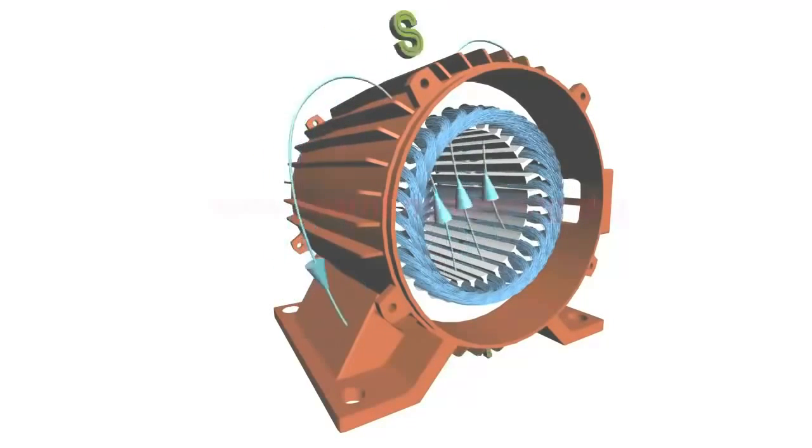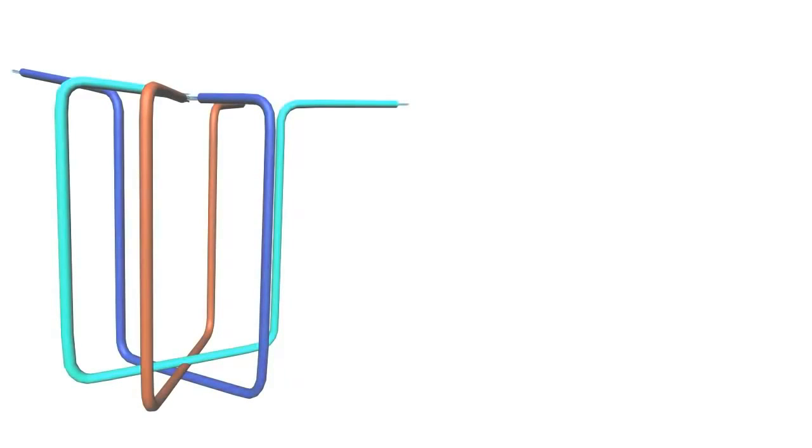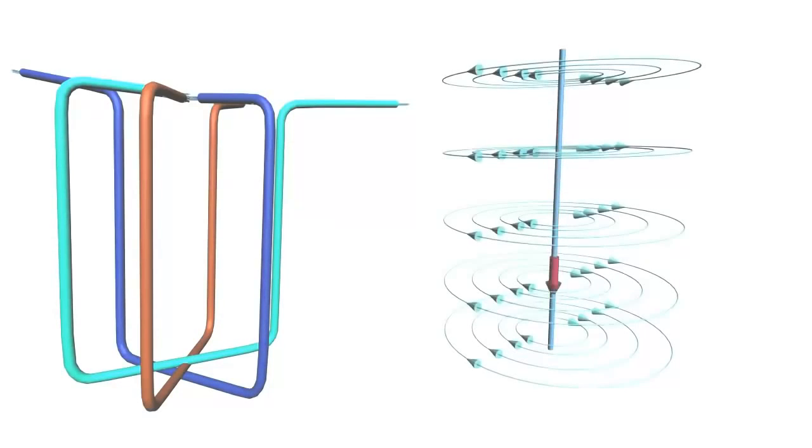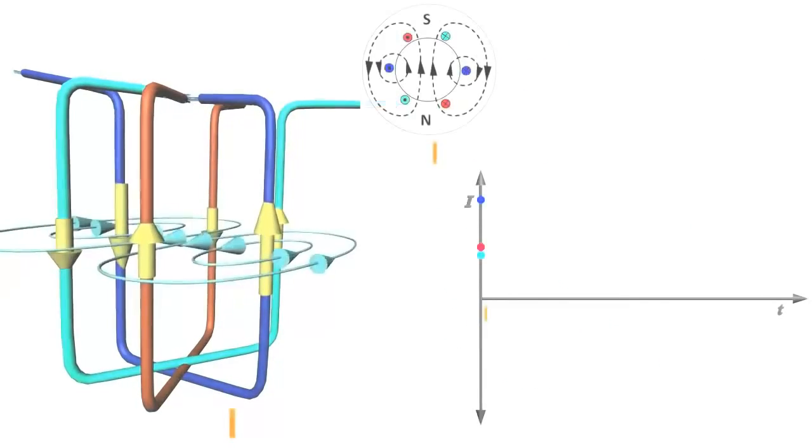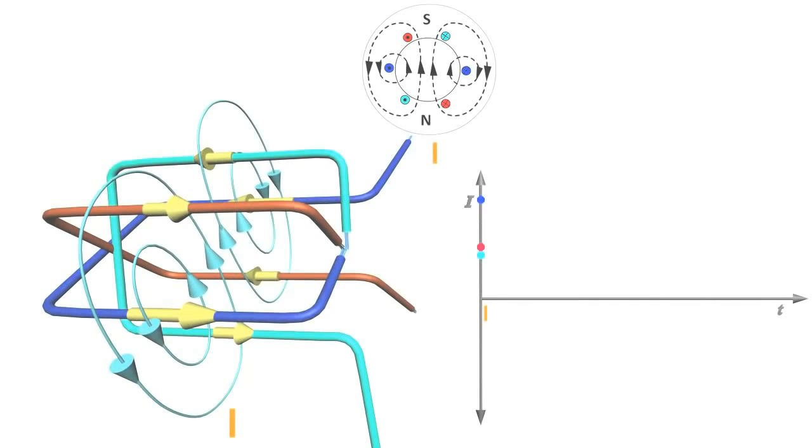To understand this phenomenon much better, consider a simplified three-phase winding with just three coils. A wire carrying current produces magnetic field around it. Now, for this special arrangement, magnetic field produced by three-phase AC current will be as shown at a particular instant.